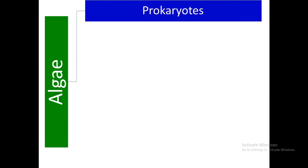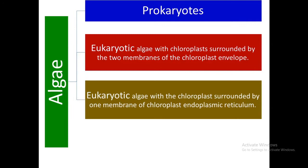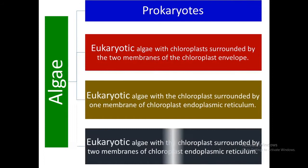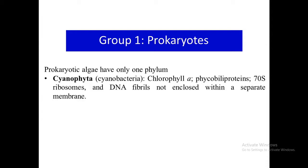The first group includes only prokaryotic algae or cyanobacteria. The second group includes eukaryotic algae with chloroplast surrounded by two membranes of the chloroplast envelope only. The third group is also eukaryotic algae with chloroplast surrounded by one membrane of chloroplast endoplasmic reticulum. The last group contains eukaryotic algae with chloroplast surrounded by two membranes of chloroplast endoplasmic reticulum. Group 1 prokaryotic algae have only one phylum — cyanophyta or cyanobacteria, the blue-green algae — forming a natural group of only prokaryotic algae. This group is represented by chlorophyll A as the main photosynthetic pigment. Prokaryotic algae have an outer plasma membrane enclosing protoplasm containing photosynthetic thylakoids, 70S ribosomes, and DNA fibrils not enclosed within a separate membrane.